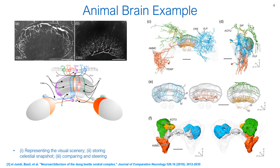If you look at this amazing animal's brain, we can see that there are different regions activated with different tasks. We can infer that the learning process is rather flexible as compared to the approaches that are available in the literature for our robots.